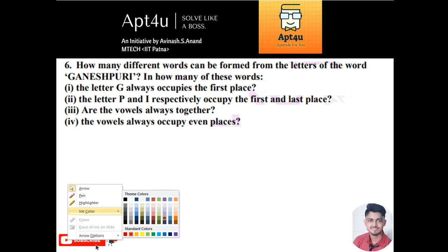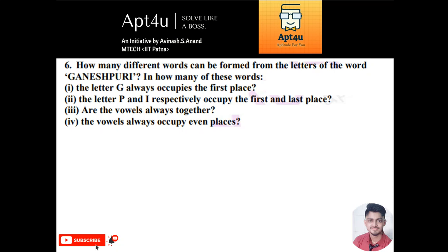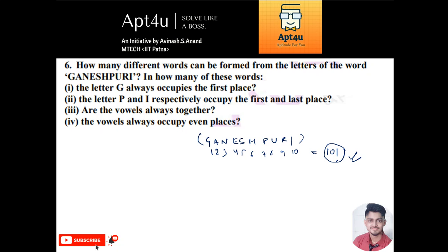The question is: how many different words can be formed from the letters of the word GANESHPURI? So GANESHPURI has ten letters — one, two, three, four, five, six, seven, eight, nine, ten — and all letters are unique, meaning no letter is repeated. So the total number of permutations is 10 factorial.